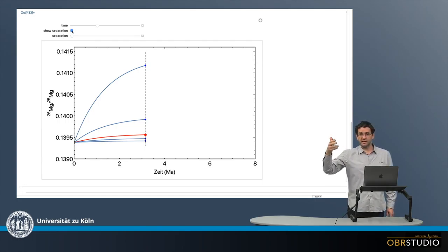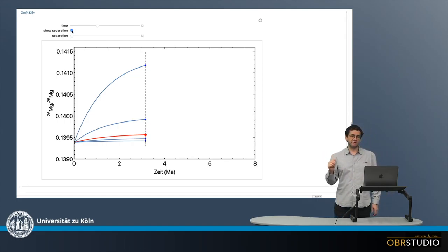There are two lines above the CI line and two lines below. The two lines above initially had more aluminum than the CI, or a higher aluminum-magnesium ratio than the CI reservoir, and the two blue lines below had only very little aluminum, so a small aluminum-magnesium ratio.